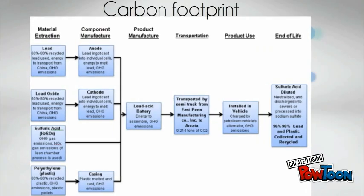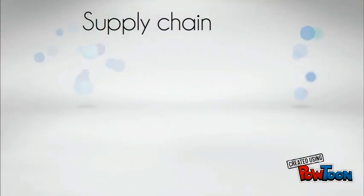Automotive batteries have a strong carbon footprint because they produce 0.2 tons of CO2 during transportation. Another impact is the sulfuric acid. At the end of life, the sulfuric acid is neutralized and discharged into soils or processed into sodium sulfate. Battery manufacturing is made of several steps.